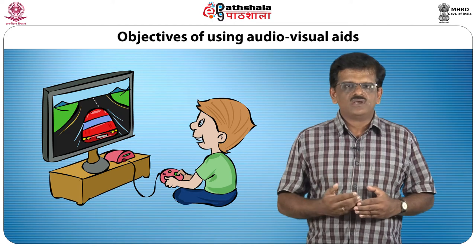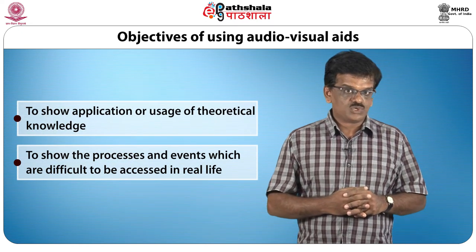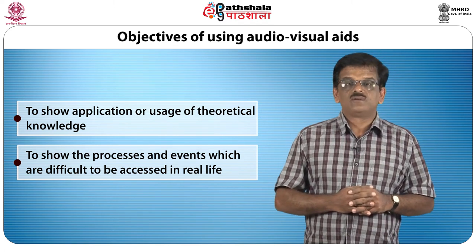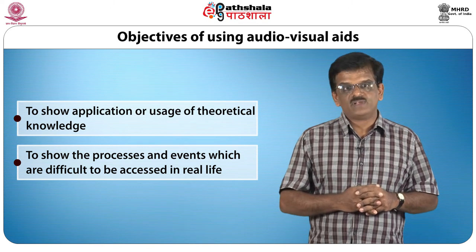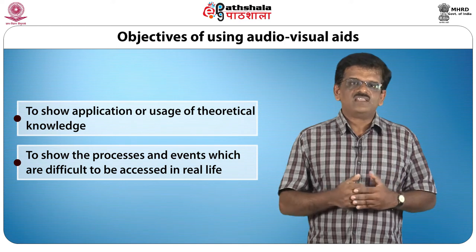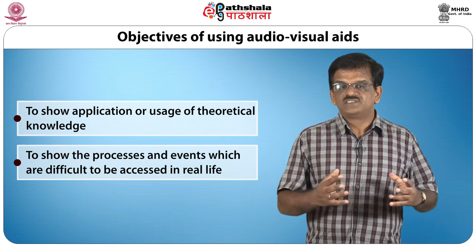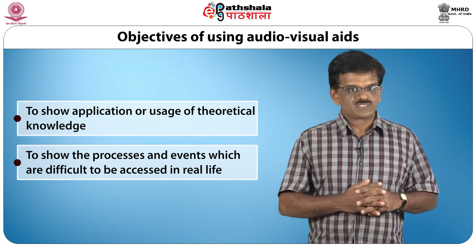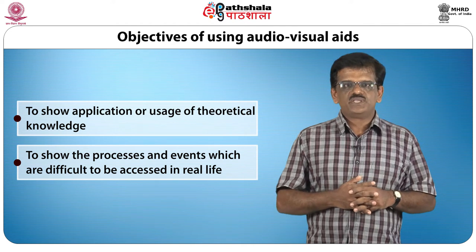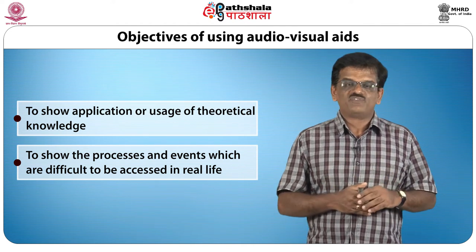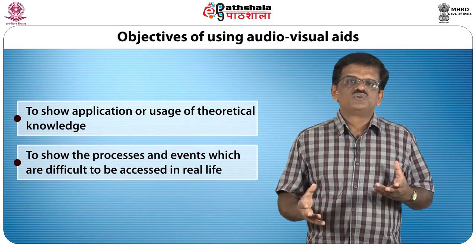This process helps the child learn complex numerical operations in a simple and interesting way. Another objective of using audio-visual aids is to show the application and usage of theoretical knowledge in the real world. For example, a presentation on operant conditioning explains human behavior as influenced by consequences of behavior, using interesting illustrations and animations. To show processes or events which are difficult to access in real life is another objective — audio-visual aids can substitute real things or phenomena. For example, a working model of a rail engine can help a child learn about its operation, which is impossible to observe in real life.